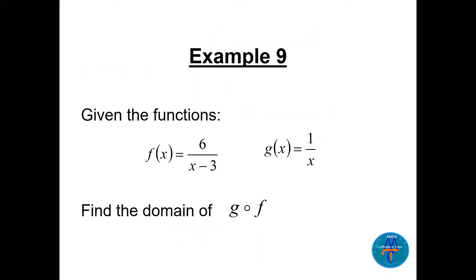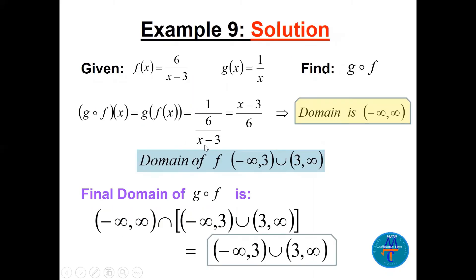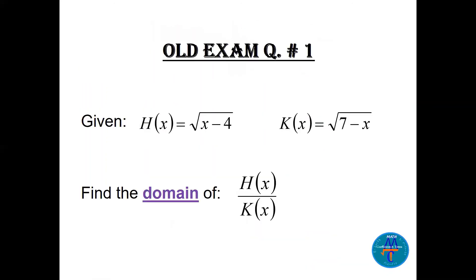Given two functions f and g, find the domain of g∘f. First find g∘f: take f and substitute into g to get (x−3)/6, which is a linear function. Its domain is all real numbers. But the domain of f excludes x = 3 (denominator cannot be 0). So the domain of g∘f is the intersection: all reals except 3, which is (−∞, 3) ∪ (3, ∞).